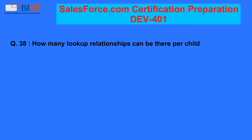Question 38: How many lookup relationships can there be per child? A. 10. B. 20. C. 15.